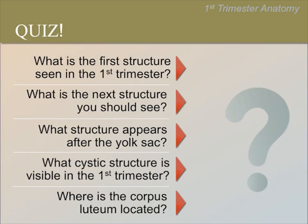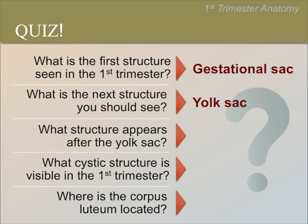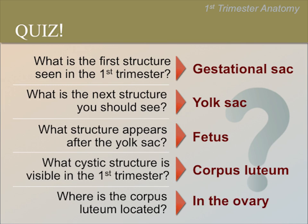Now let's see if you remember what we just learned. Pause the video now to give the group time to discuss the questions. The first question is: what is the first structure seen in the first trimester? The answer is the gestational sac. What is the next structure you should see? The answer is the yolk sac. What structure appears after the yolk sac? The answer is the fetus. Which cystic structure is visible in the first trimester? The answer is the corpus luteum. Where is the corpus luteum located? The answer is in the ovary.